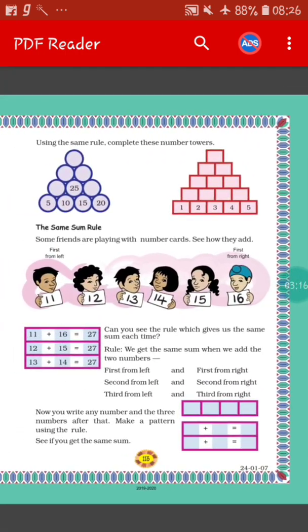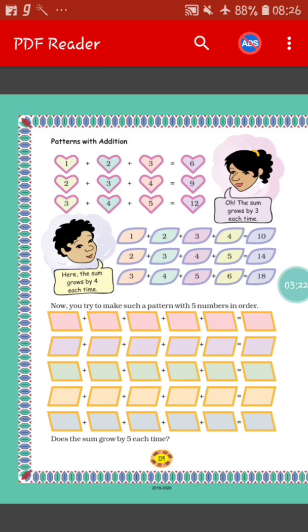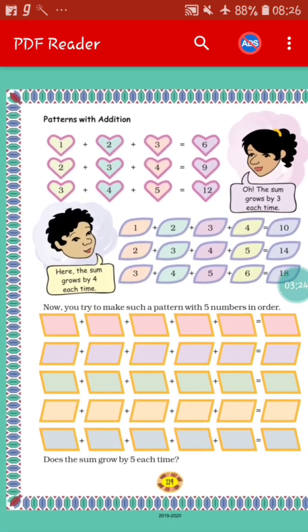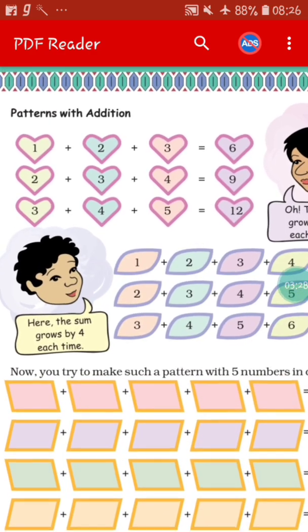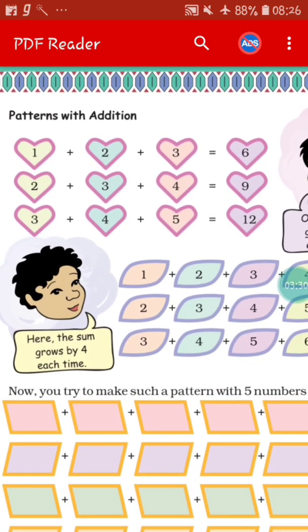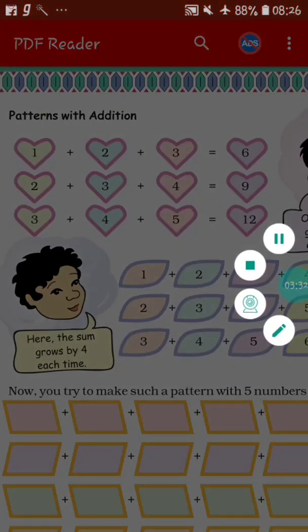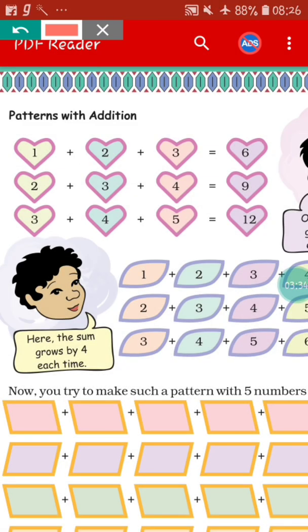You can try this by using any numbers. Let's go to the next page: Patterns with Addition. Here you can see patterns done using addition. See the first one — when they are adding 1 plus 2 plus 3, the answer is 6.